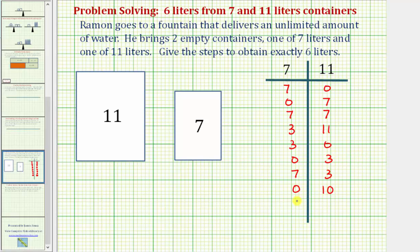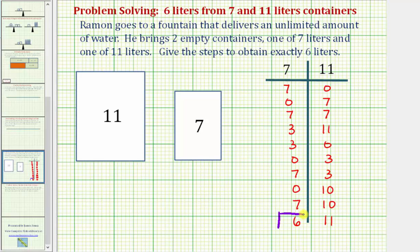And now we're almost there. We're going to fill up the seven-liter container again, so we have seven liters here and ten liters here. Now we'll fill up the eleven-liter container by pouring exactly one liter from the seven-liter container into the eleven-liter container. That would give us six liters here and eleven liters here. Notice how we have exactly six liters in the seven-liter container, and therefore we've accomplished our goal.